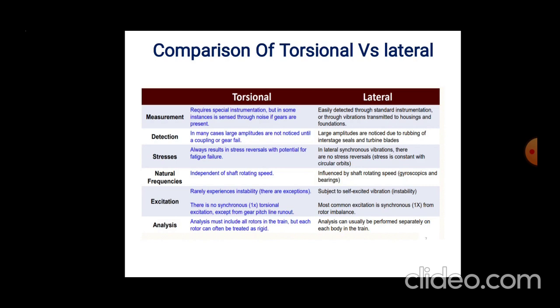Torsional vibration requires special instrumentation, while lateral vibration uses standard instrumentation for detection in many cases. In torsional vibration, large amplitudes are not noticed until the coupling or the gear fails. In lateral vibration, large amplitudes are noticed by rubbing in the stator of the cell. Stresses always result in stress reversals with potential for fatigue. In lateral synchronized vibrations, there are no reversals — the trace is constant with circular orbits.